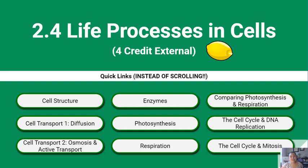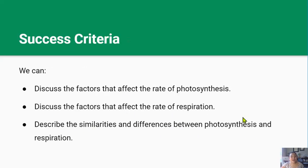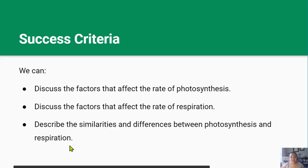Kia ora team! Welcome back to the 2.4 video series. This is video number 7. In this lesson you'll be learning about the factors that affect the rate of photosynthesis and cellular respiration, and the similarities and differences between them. By the end of this lesson you should be able to discuss the factors that affect the rate of photosynthesis and cellular respiration, and describe the similarities and differences between photosynthesis and respiration.